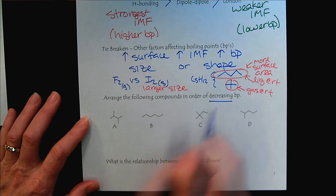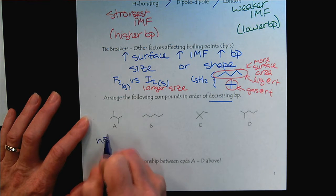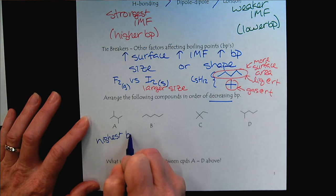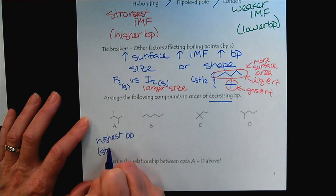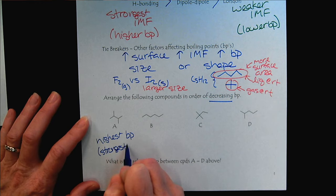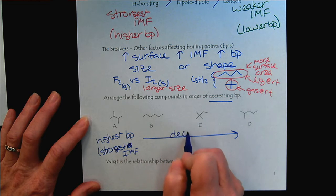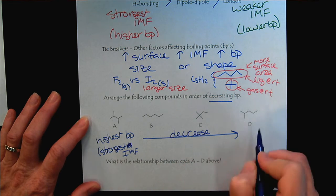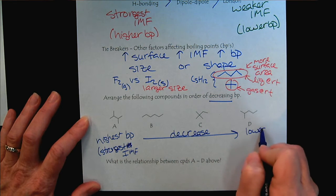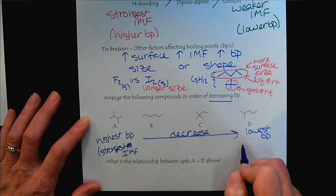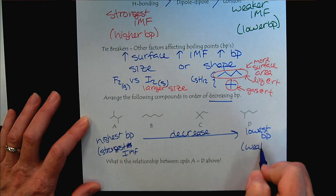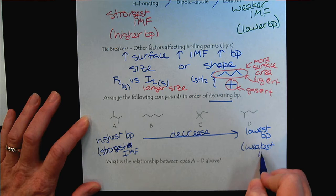So decreasing means we start with highest boiling point, which of course means strongest IMF. And then we decrease down to the lowest boiling point, which of course has the weakest IMF.